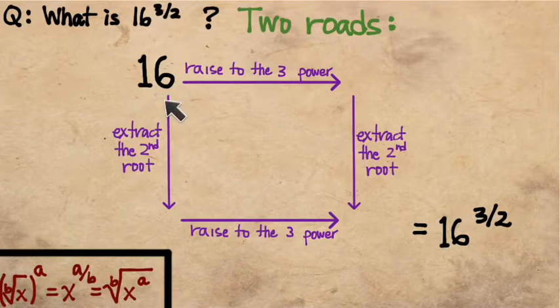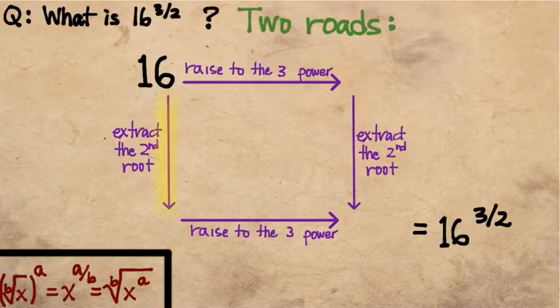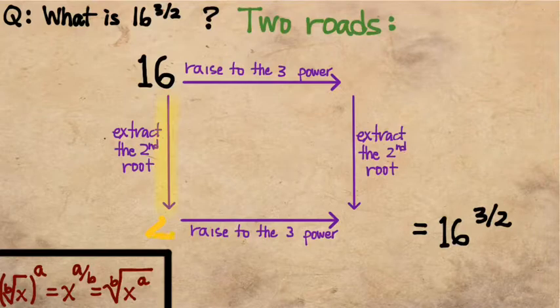Probably the way that you did this problem was you walked this road, where first you took the square root, the second root, of 16. And what is the second root, the square root of 16, equal to? It's equal to 4. And so if we walk that road, we first get to a 4.